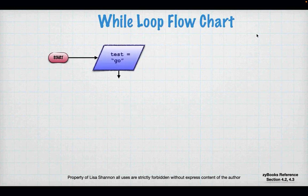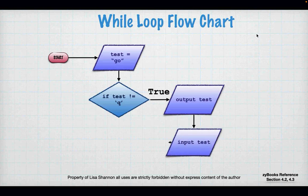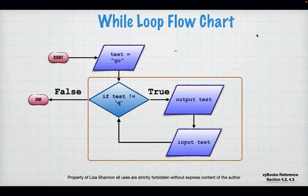Let's look at this as a flowchart. I have test equal to 'go', if test is not equal to Q, output test, input test, and then go back to that decision diamond — that is a loop. If you're a visual thinker, this is how you think about a loop. It always has to be true to enter the loop, then you do what's inside and go back to the question.